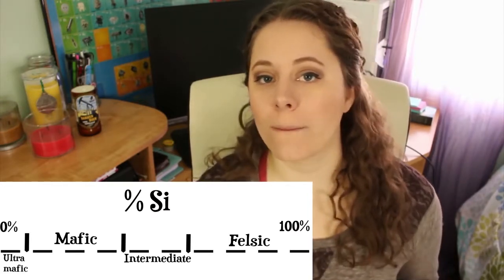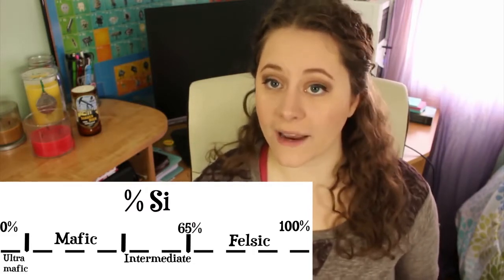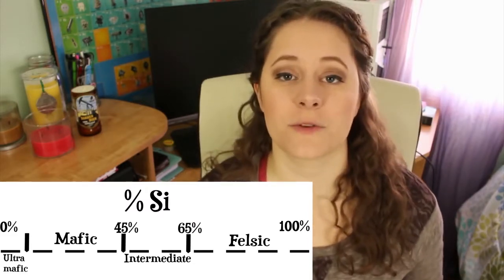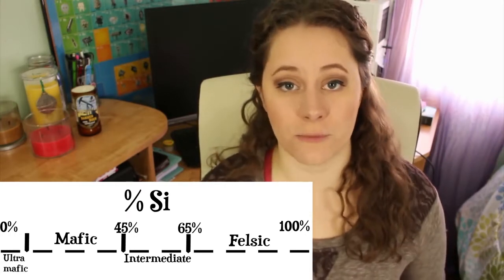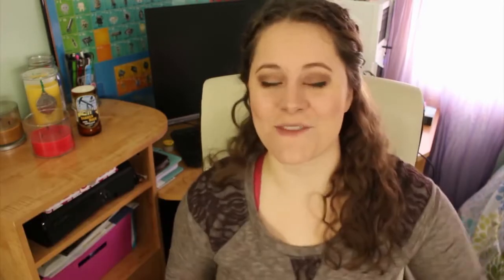As a general rule, a rock or magma that has a composition of 65% silica or higher is considered felsic. A rock that has 45% or less is considered mafic. That gray area in the middle is the intermediate composition. A fun tip: if a rock is dark in color, it's typically mafic, and the lighter in color it is, the more felsic. Now you might be wondering how we got the terms mafic and felsic out of determining silica content.